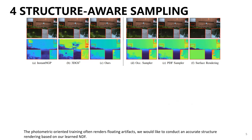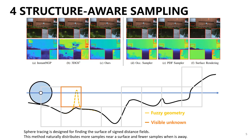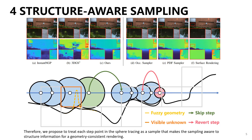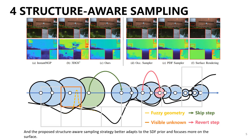Photometric-oriented training often renders floating artifacts. We conduct accurate structure rendering based on our learned NDF. Sphere tracing is designed for finding the surface of signed distance fields, and naturally distributes more samples near a surface and fewer samples when away. Therefore, we propose to treat each step point in the sphere tracing as a sample, making the sampling aware of structure information for geometry-consistent rendering. The proposed structure-aware sampling strategy better adapts to the SDF prior and focuses more on the surface.